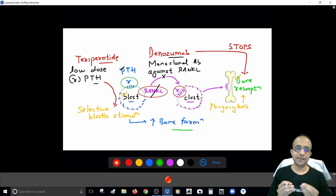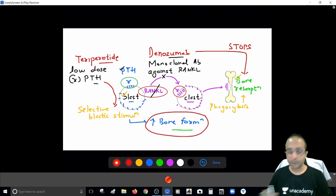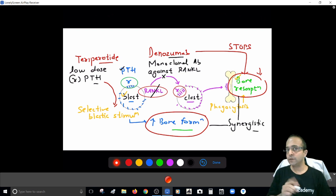So I hope you are clear how Teriparatide and Denosumab work. And I hope you have just noted, one drug steps up bone formation, the other one stops the bone resorption. So even if you combine the two drugs, you are going to find the combination to be synergistic. So this is the best line of treatment we have right now in India for managing even the most resistant versions of osteoporosis.